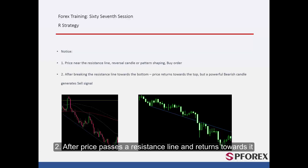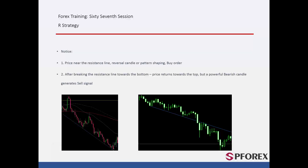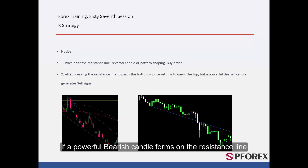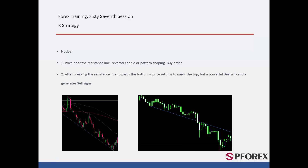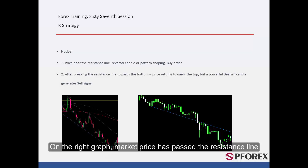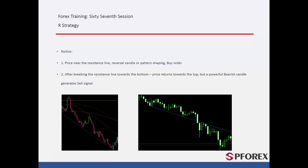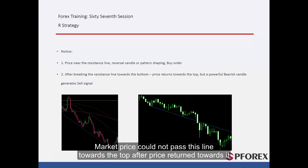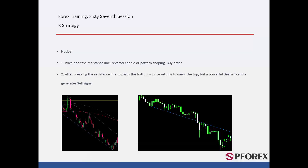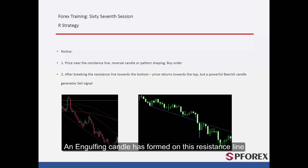After price passes a resistance line and returns towards it, if a powerful bearish candle forms on the resistance line, then a reliable sell signal will be generated. On the right graph, market price passed the resistance line but could not pass this line towards the top after price returned towards it. An engulfing candle formed on this resistance line, so a trader could place a sell order.